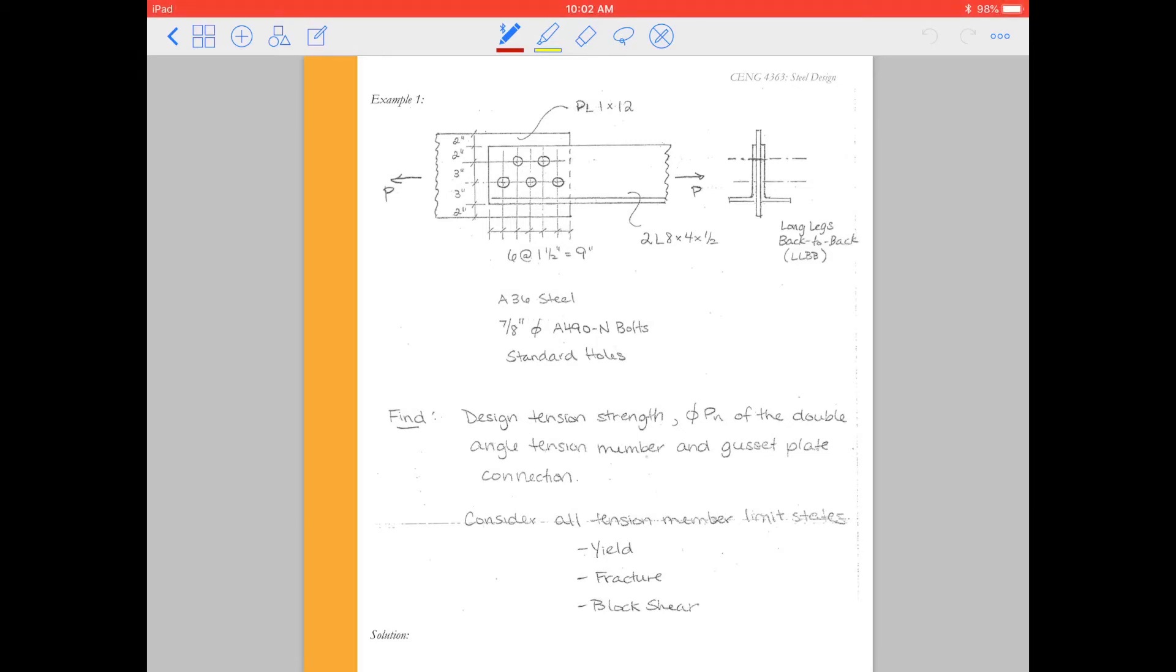Hello Steel Friends! Today I wanted to go over with you another example. We're going to look at, in this example, a double angle member. So that's a 2L 8 by 4 by a half.